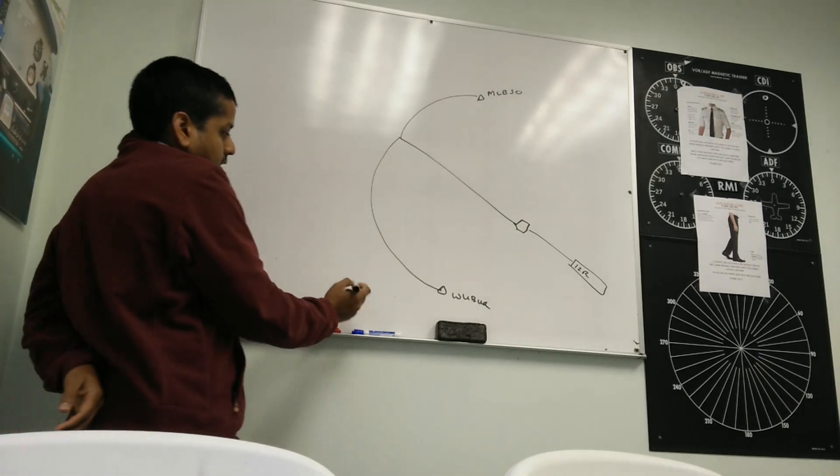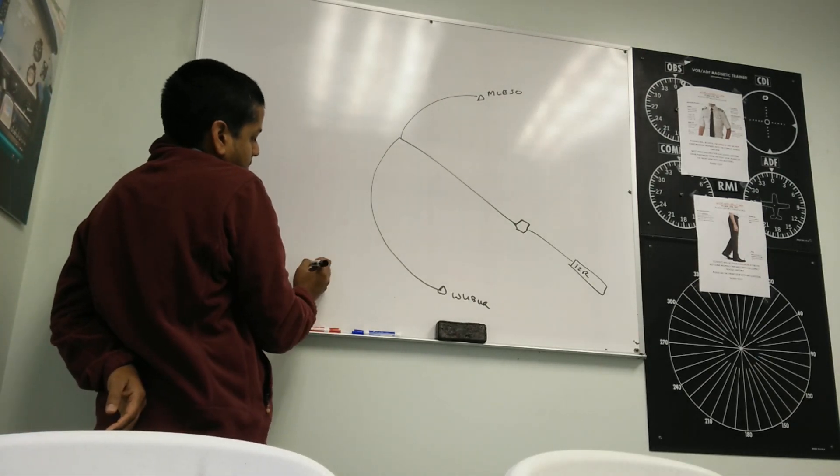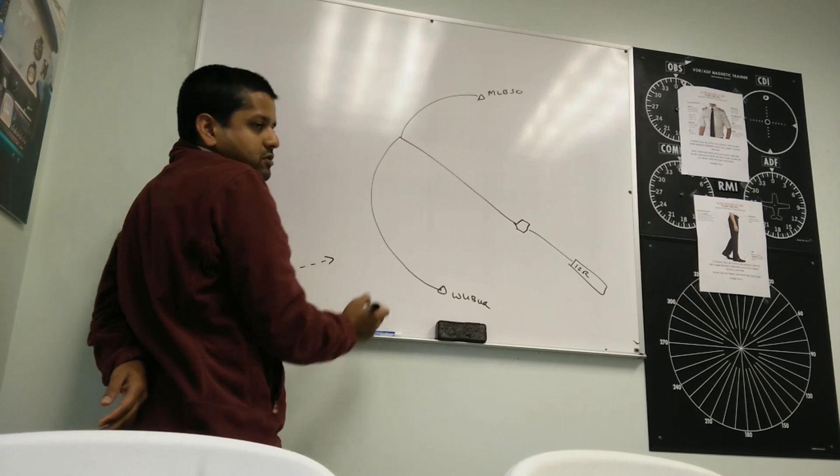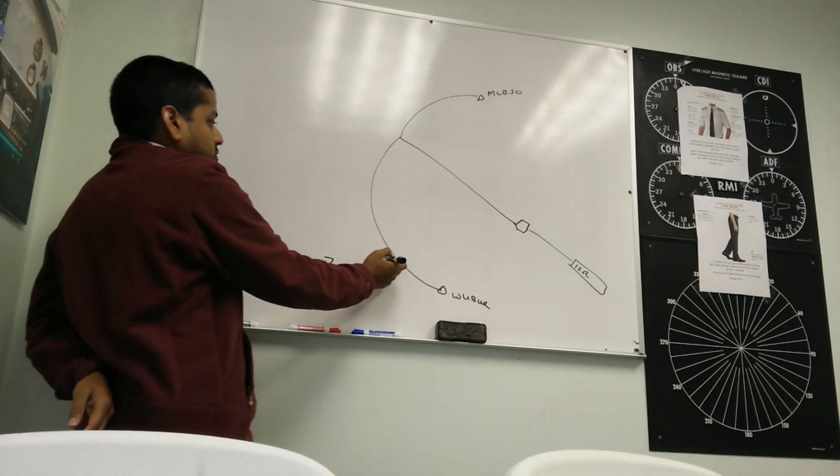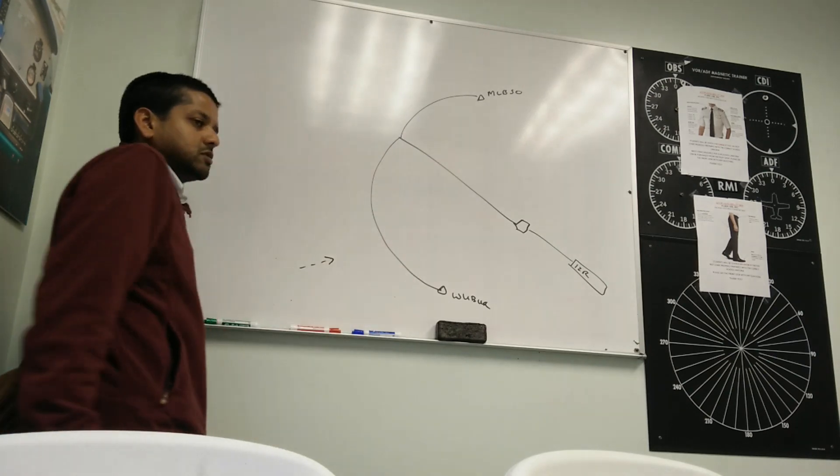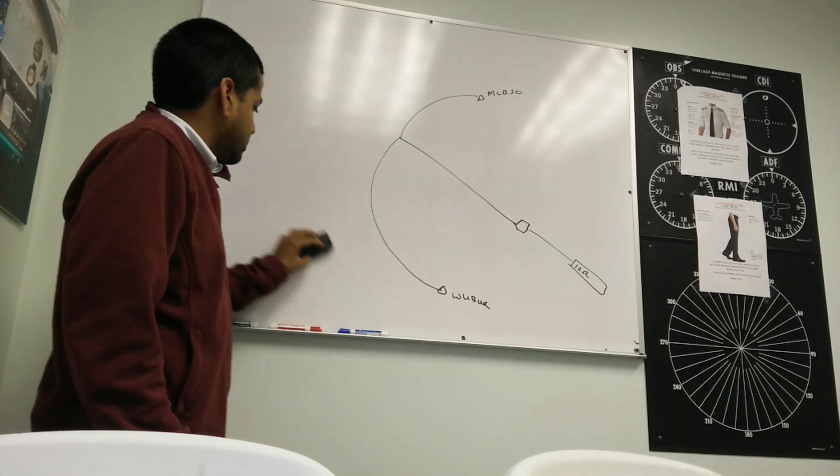Also, you might choose to do a DME arc. Maybe you're coming from here, but you want your height, so you want to lose some altitude. Right? So you can always join the arc and it will take you around. That's why you join an arc.